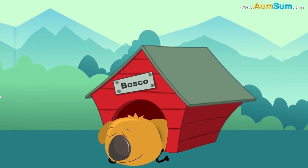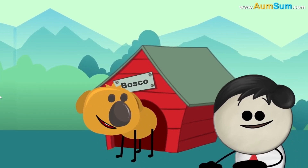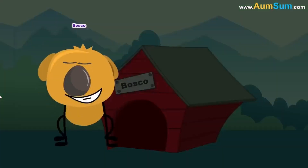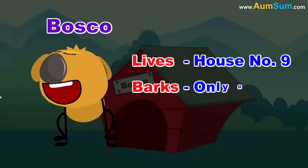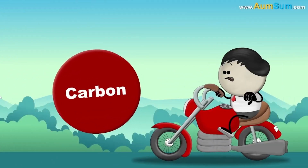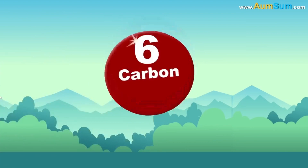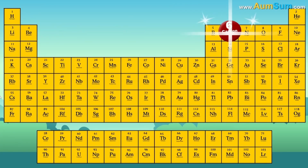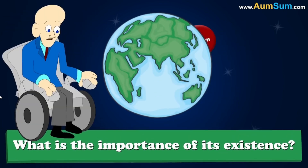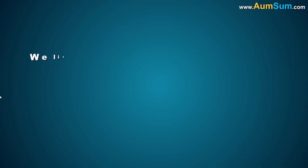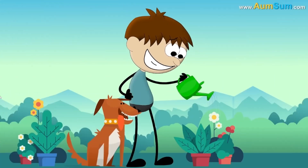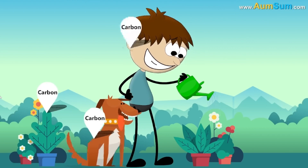Have you met Bosco? If we had to introduce him, we would say Bosco lives in house number 9, barks only at 2 pm, and absolutely loves to sleep. Similarly, what is carbon's identity? Probably an element that has atomic number 6, present in the second row of the periodic table. But what is carbon here for? What is the importance of its existence? We literally would not be able to exist without carbon. It is known to be present in some form or the other in every known life form on Earth.